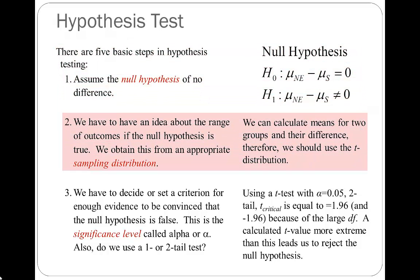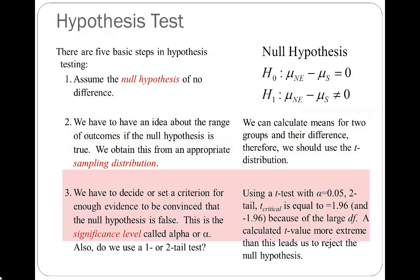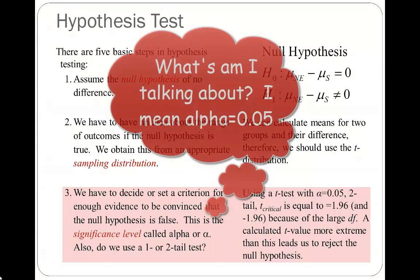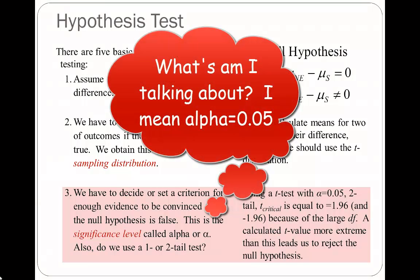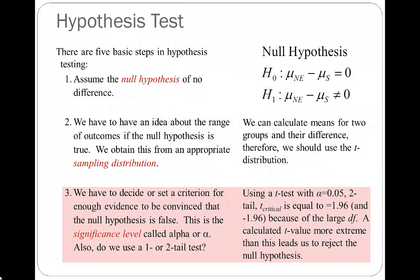Step two: my dependent variable is continuous (crime rate) and my independent variable is dichotomous (Northeast vs. South), so I use a difference of means t-test and the t-distribution as my sampling distribution. Step three: I've decided to use an alpha of 0.02, two-tailed. With a large number of counties, my critical values are plus or minus 1.96. I now move to step four and calculate my test statistic.